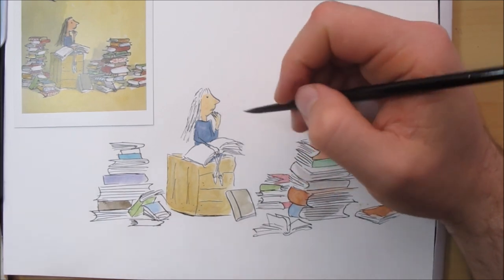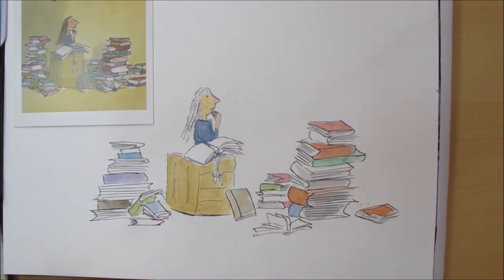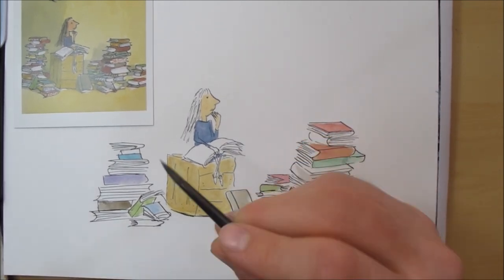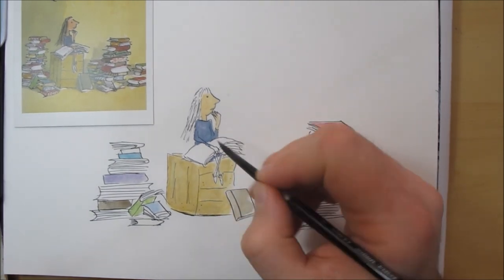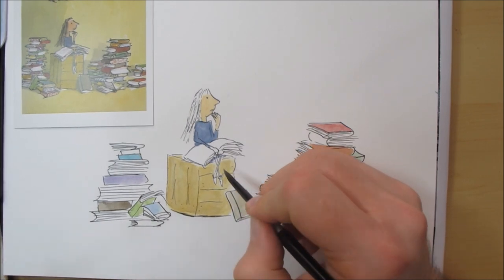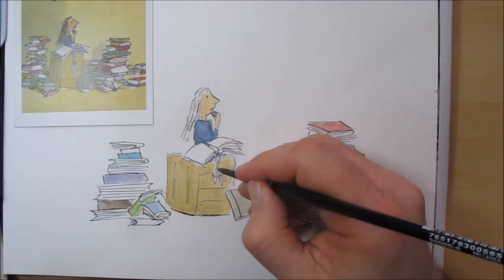One thing Quentin Blake does, always seem to do, is give his characters very large hands in comparison to the body. That's not quite the case here, but it's still a little bit oversized. But I've noticed that with a lot of his characters. They're quite spiky fingers as well.